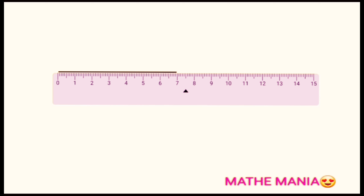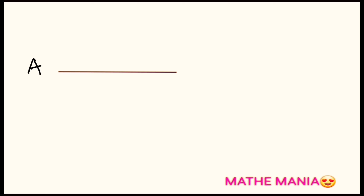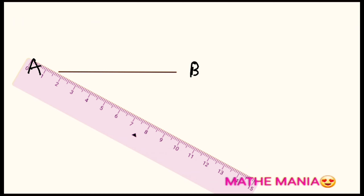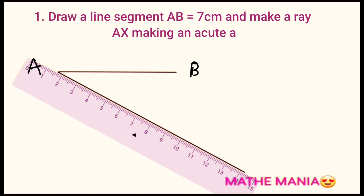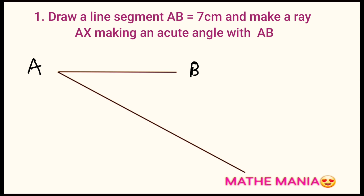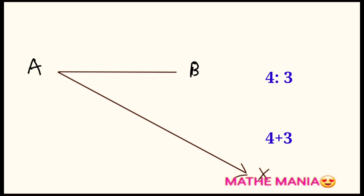Let's start with the first type where we have to divide a line segment in a given ratio. I'm going to take a line segment and divide it in the ratio 4:3. First I draw a line segment of seven centimeters and name it AB. Next I keep my scale aligned with AB to make an acute angle, so I draw ray AX to make some acute angle with the line segment AB. The ratio given is 4:3, and 4 plus 3 is seven.